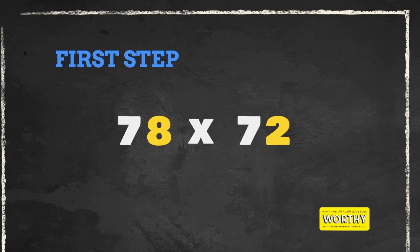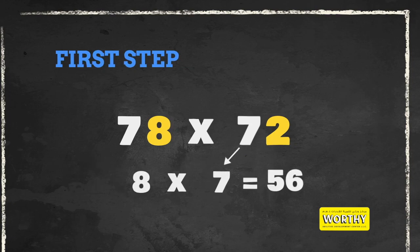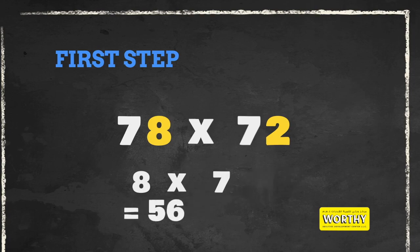So let's do this. First step, add 1 to the 10's value of your first 2-digit number and then multiply it to your second 10's value number. In this case, 8 times 7 is equals to 56.